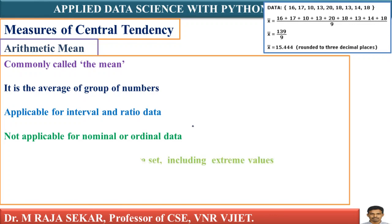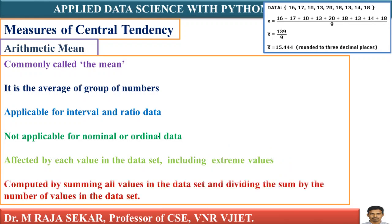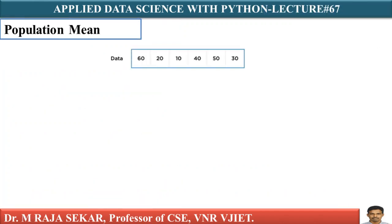This is affected by extreme values. This is affected by outliers. I will explain this after a few seconds. Just understand that this arithmetic mean is affected by extreme values. This is simple formula how one can calculate arithmetic mean. We will take one simple numerical example.